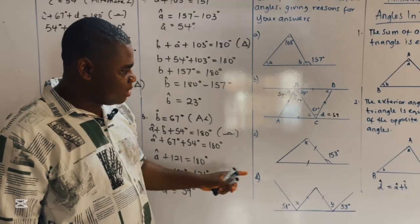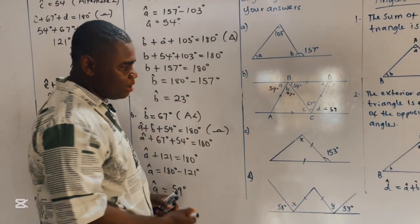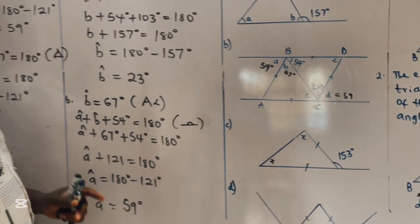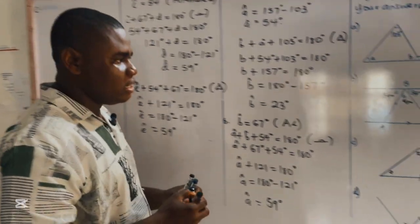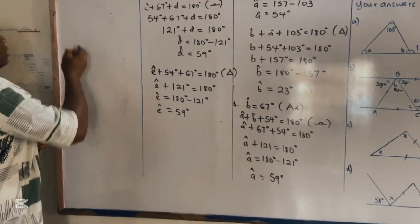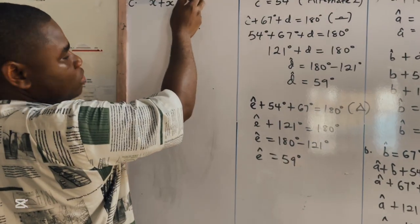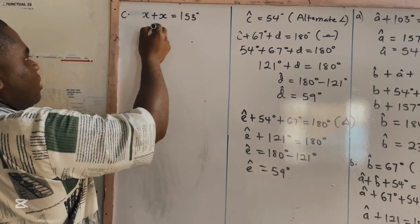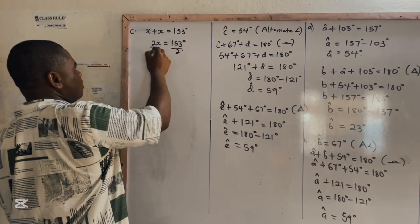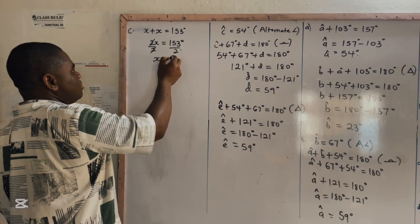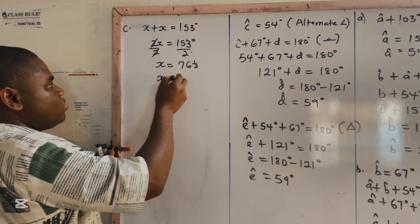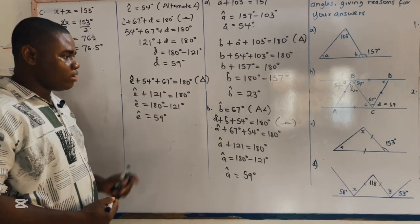For the next example, this is an isosceles triangle and the base angles of an isosceles triangle are always equal, so we can call the two equal angles X. Using the exterior angle rule, X plus X equals 153 degrees, so 2X equals 153 degrees. Dividing both sides by 2, X equals 76.5 degrees.